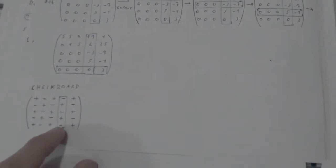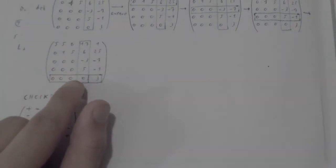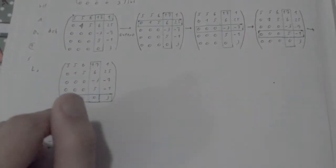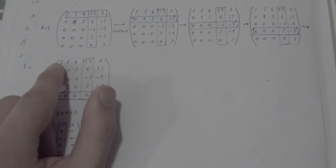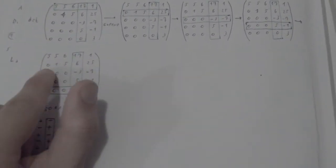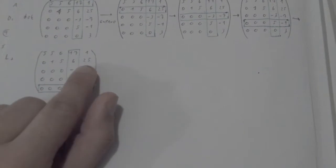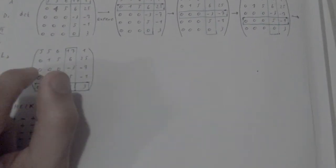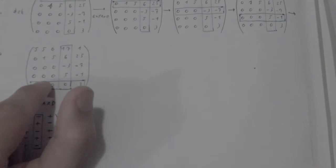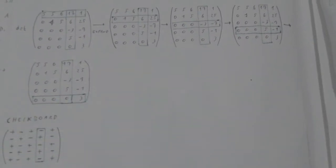Continuing the expansion: we have plus negative one times zero times the determinant of those remaining values — 5, 5, 6, 1, 0, 1, 5, 25, 0, 0, 0, negative 7, 0, 0, 0, negative 1 — and so on. I wrote it down, and those are the matrices I was talking about.